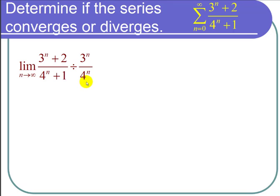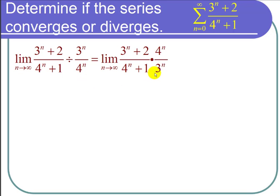So I divide fractions by multiplying by a reciprocal and then I'm going to multiply the 4 to the n through in the numerator and the 3 to the n through in the denominator. And I get the limit as n approaches infinity of 12 to the n plus 2 times 4 to the n over 12 to the n plus 3 to the n.